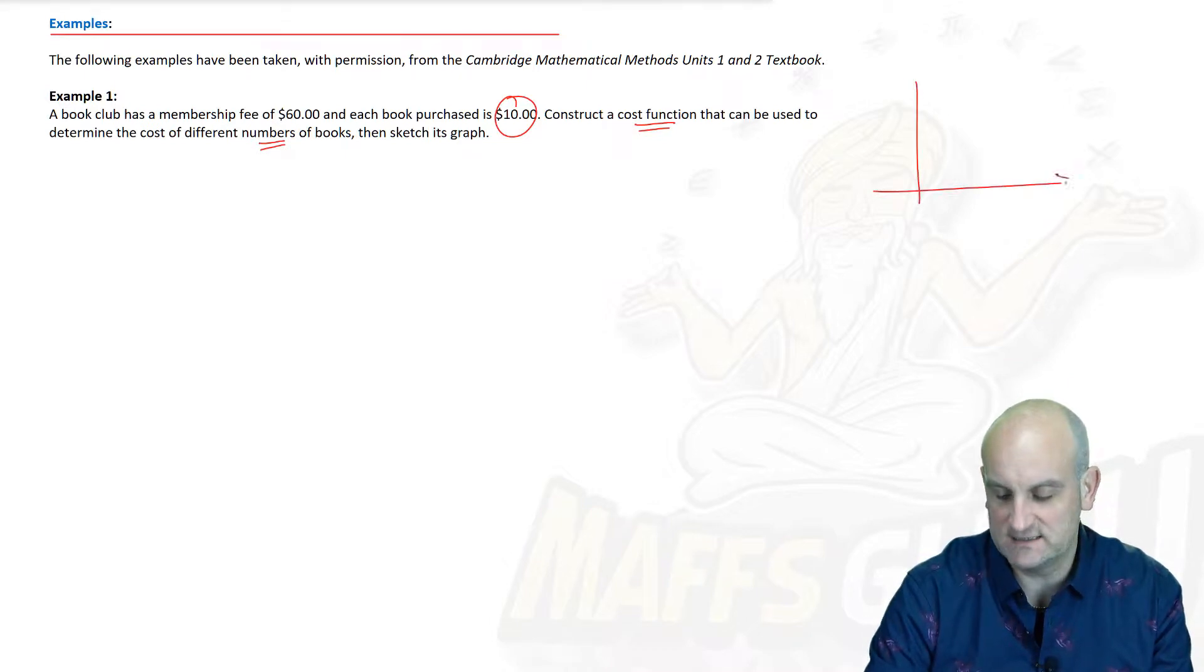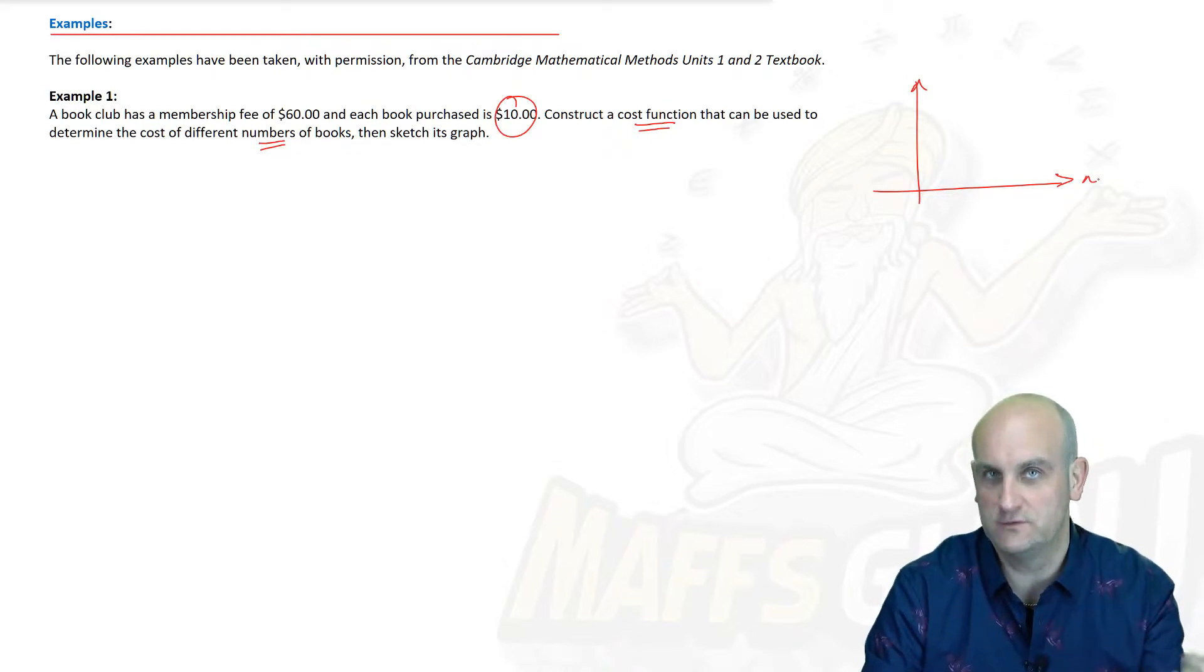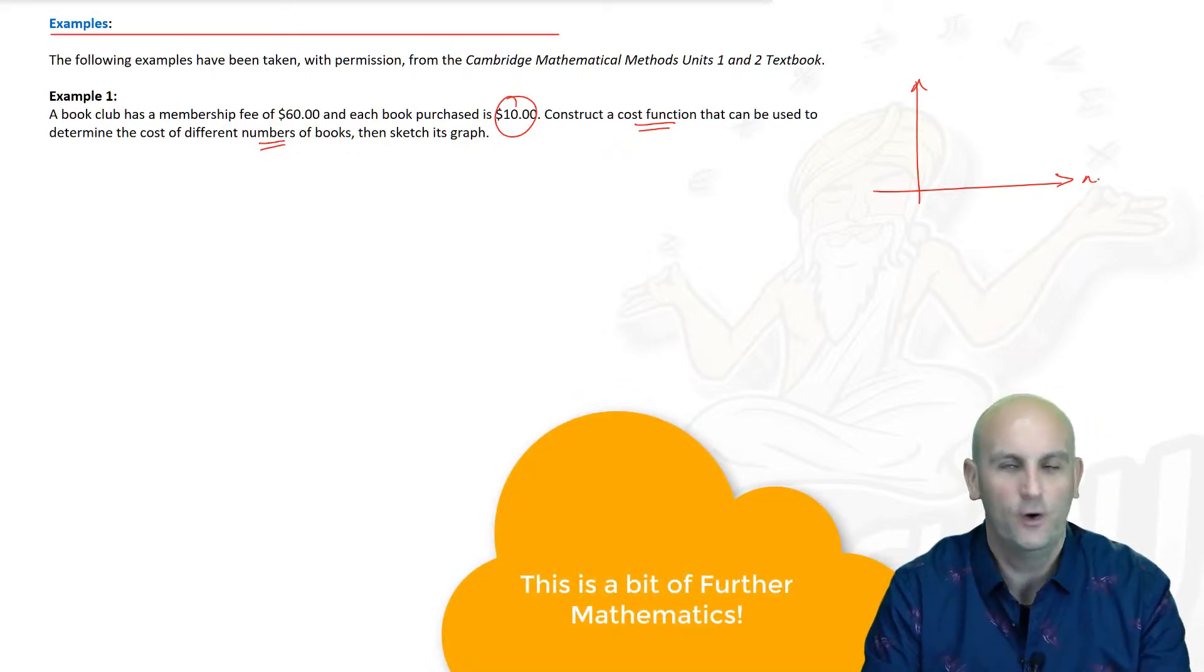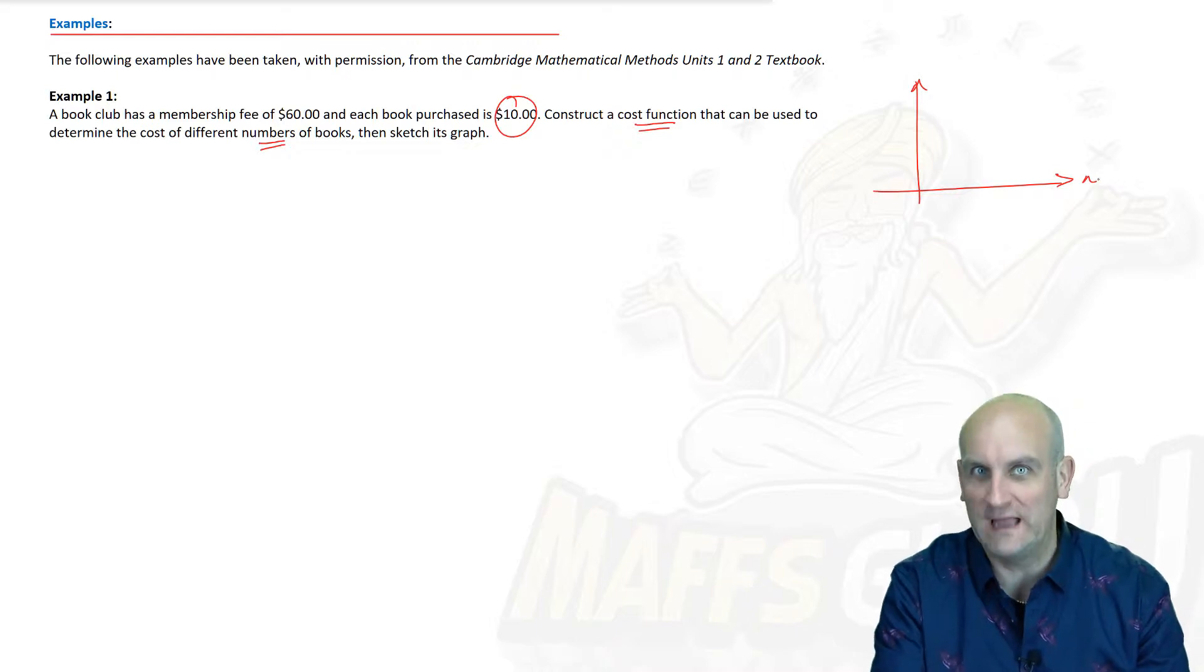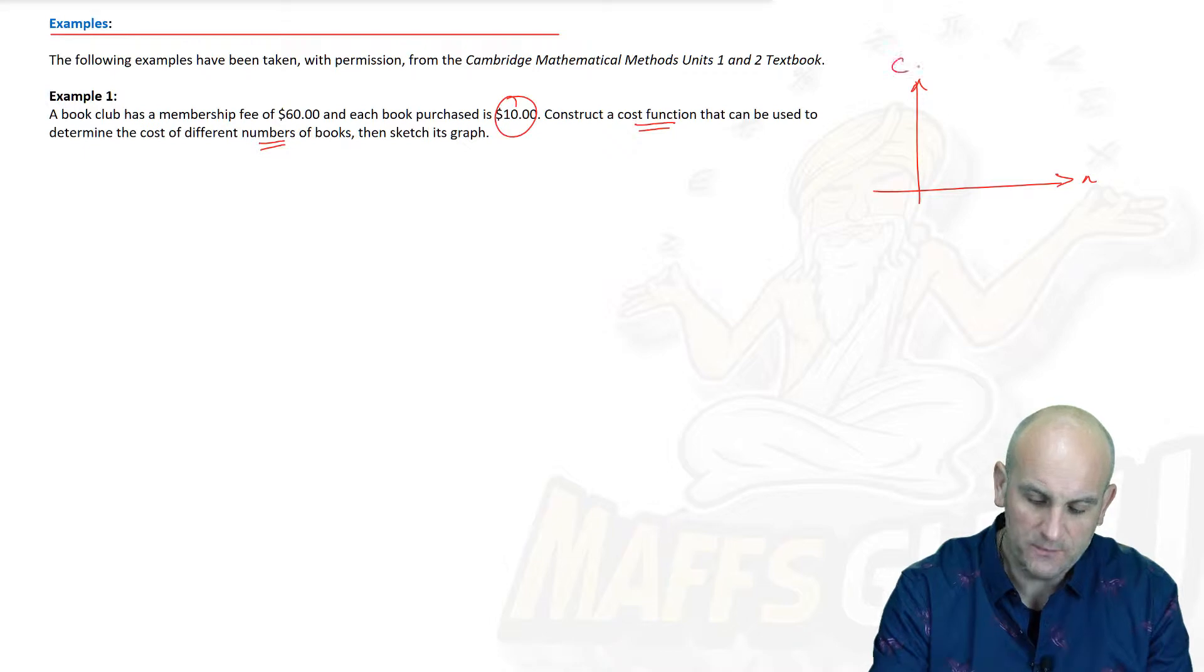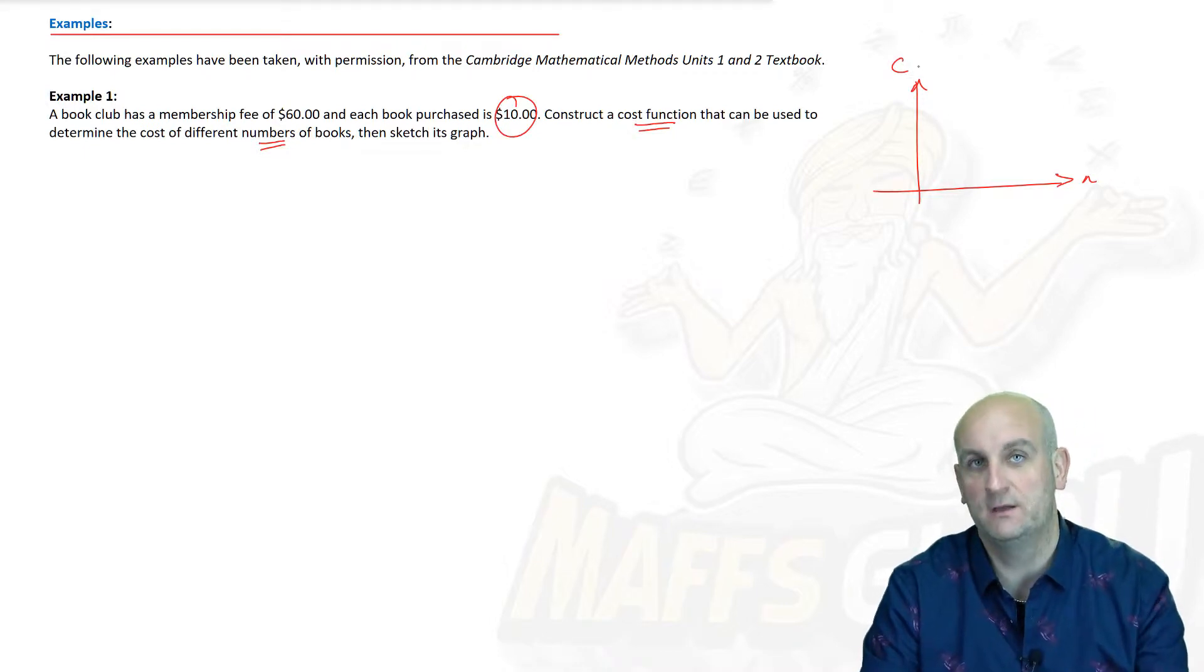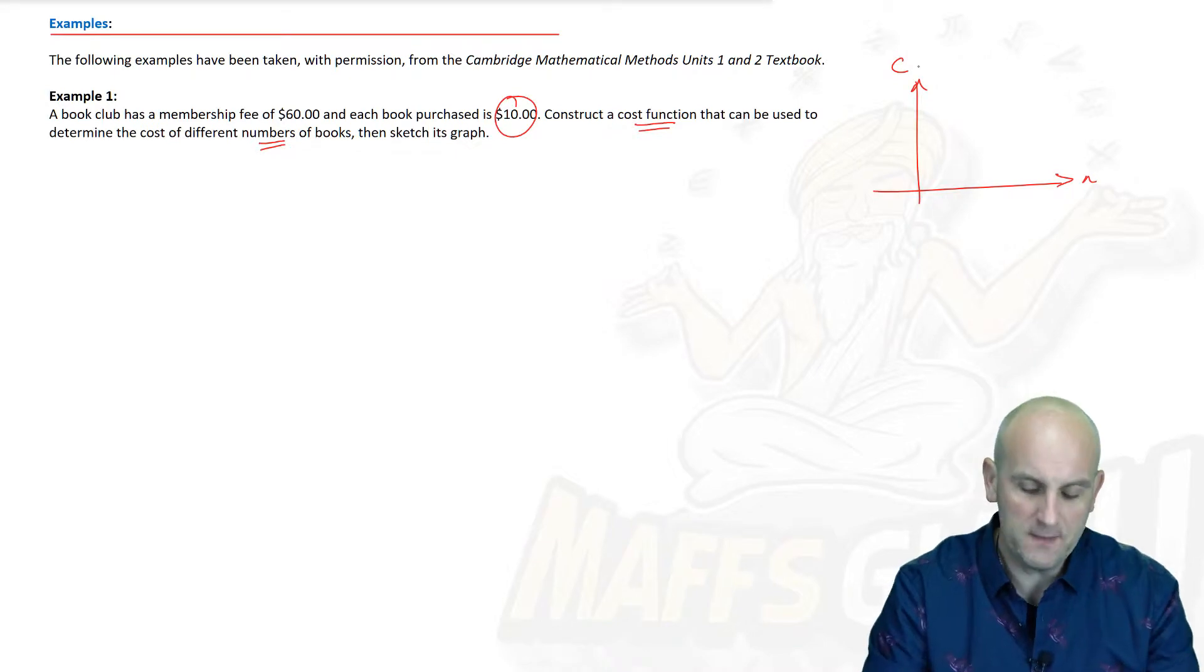Very quickly when we have axes, the thing that we change tends to go on the bottom of a set of axes. So things that change as a result tend to go on the vertical part. These are called the explanatory and response variables or the independent and dependent. Sometimes it's good to know the language before we start.